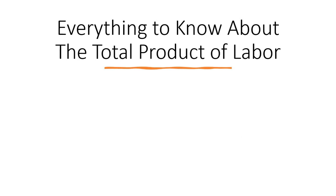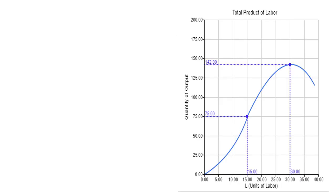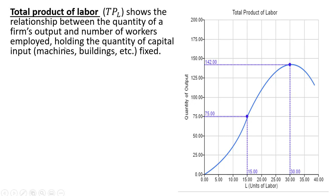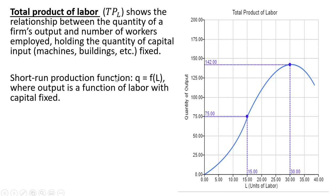Hello, this video is going to look at the total product of labor. The total product of labor shows a relationship between the quantity of a firm's output and number of workers employed, holding the quantity of capital input fixed. We can think of this as a short-run production function where the quantity of output of the firm is a function of units of labor, L.